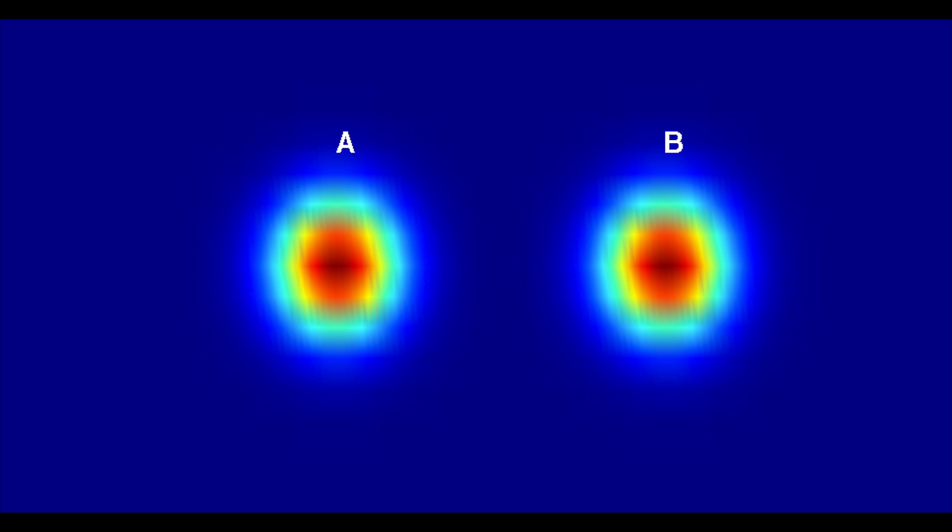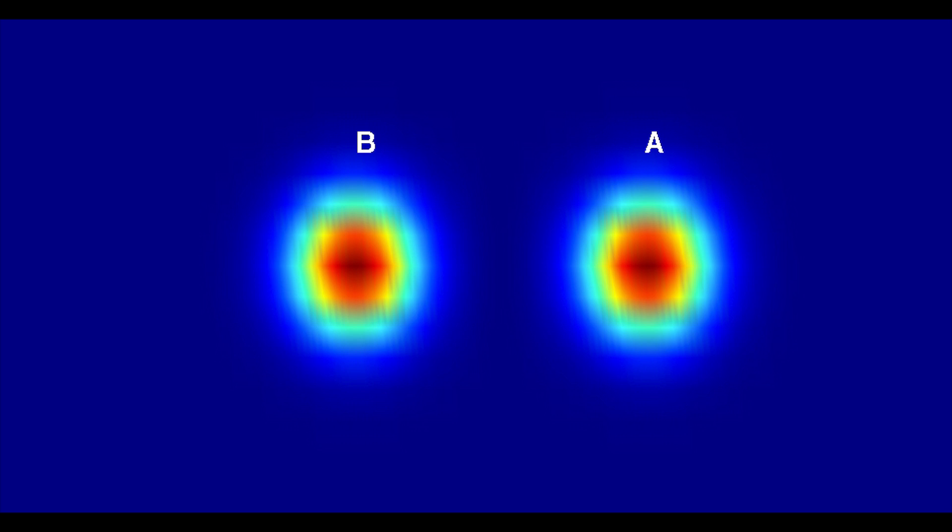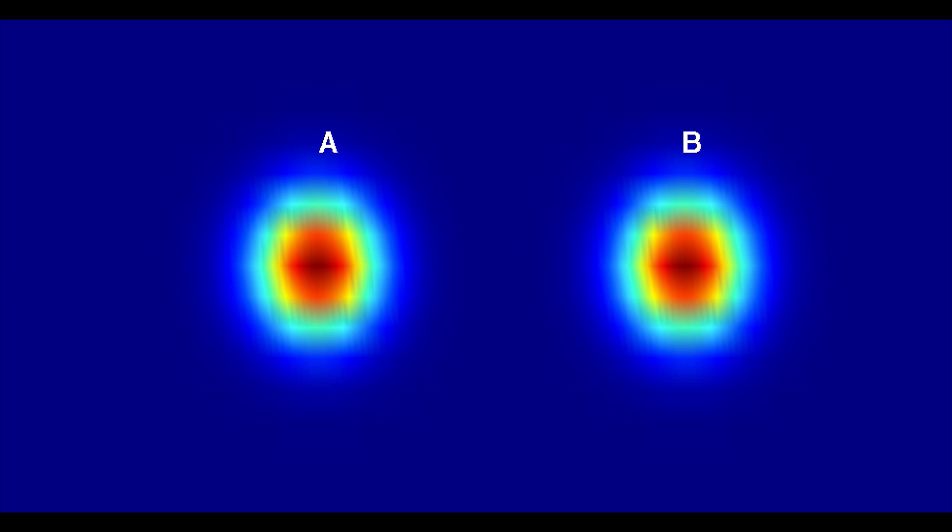We're studying how these solitons collide with each other. We make two of them on opposite sides of a one-dimensional tube, and we shoot them at each other, and we see how they scatter and how they interact, and then look at the end of that at the process of the soliton interaction.